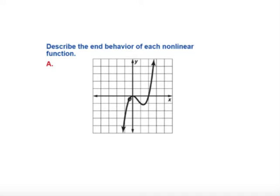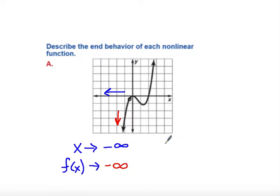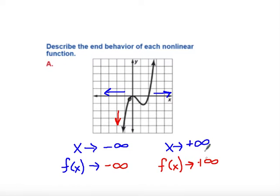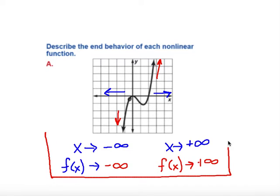Our third example: describe the end behavior of this nonlinear function. This is a polynomial that gives us curves. As x approaches negative infinity — going to the left — the function, that's where the curve is headed, is going down, so it's going to negative infinity. As our function goes to the right to positive infinity, the function is approaching positive infinity as well because it's going up. So as x approaches negative infinity, our function goes down; as we go to positive infinity, our function goes up. That is our end behavior.